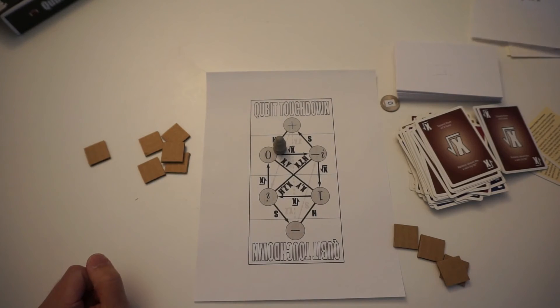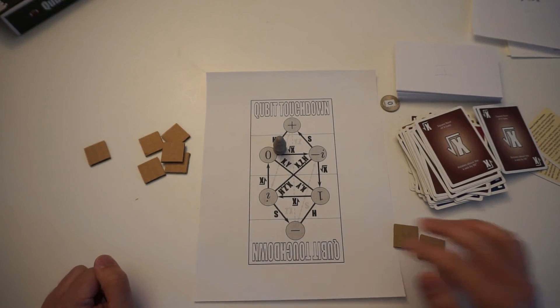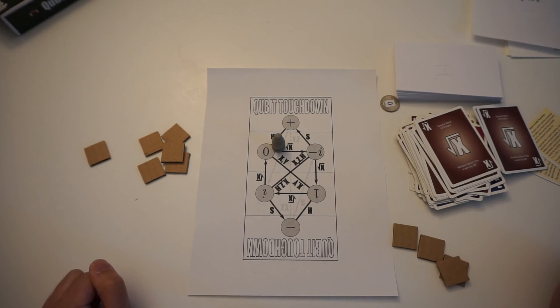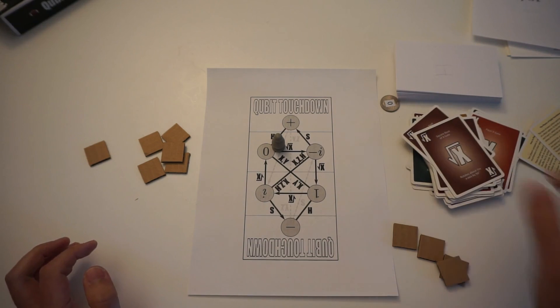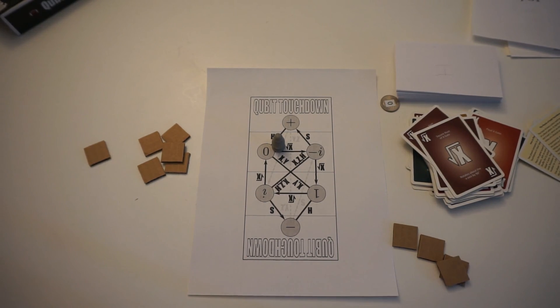So that's all the components you need. Again, you can download these PDF documents from my website at thomaswong.net, or you can purchase a copy that's professionally made from thegamecrafter.com.